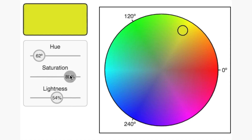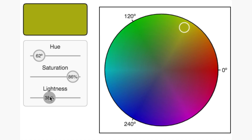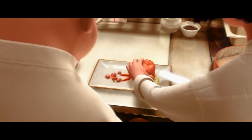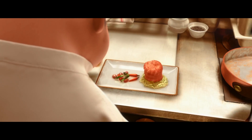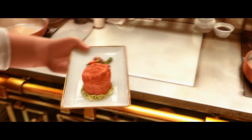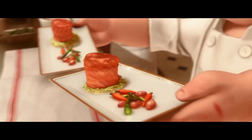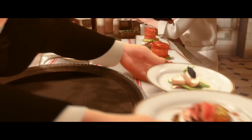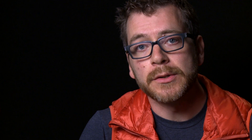We just learned that every color has a hue, saturation, and lightness. But colors appear in our world alongside other colors, and that can really affect how they appear. It's also when things can get really, really weird.